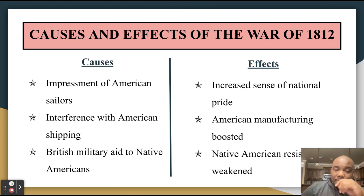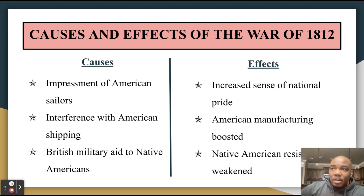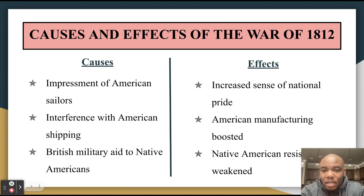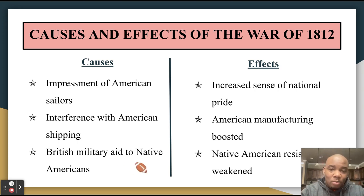Let's start off with a quick review of the causes and effects of the War of 1812. On the left, you see causes: impressment of American sailors — I think by now we all know what impressment means — interference with American shipping and taxing American cargo, even though it's not going back and forth from Great Britain to America. Also, impressment, basically kidnapping American sailors and forcing them to work for the British military. Another big cause was the British military giving aid to Native Americans — giving weapons to tribes like the Shawnee under Tecumseh, who were fighting Americans moving onto Native lands.